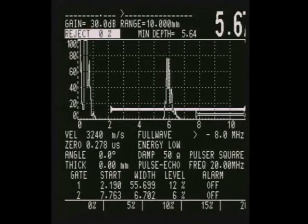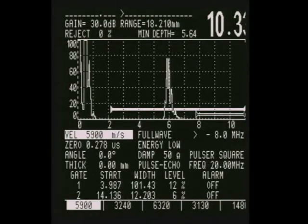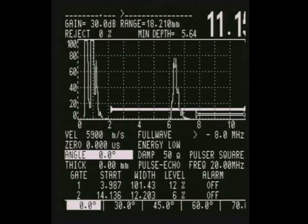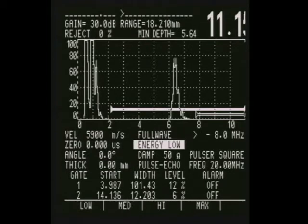Bring the range down to 10mm. Reject to zero. Velocity is at 3240. We're going to set that at 5900. Zero to zero. Angle to zero. Thick to zero. Full wave. Energy is low.